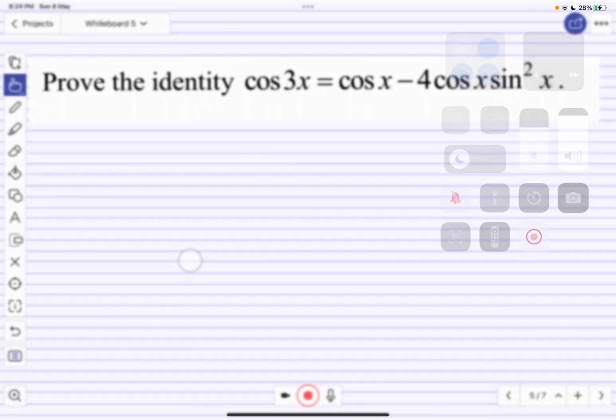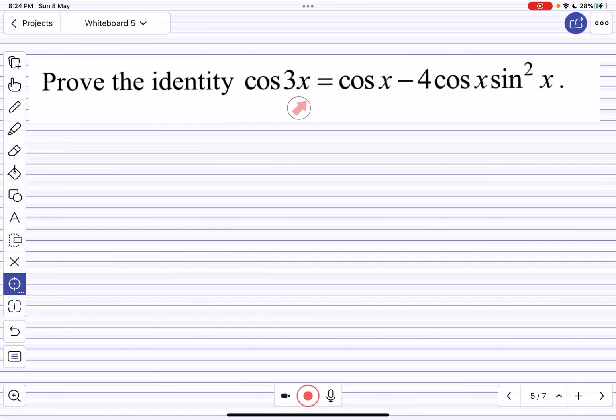So for this question, we are supposed to prove the identity cos 3x equals cos x minus 4 cos x sin squared x. Probably what I'll do is, because it's easier to strip a big angle down than to assemble a small angle upwards to a big angle.